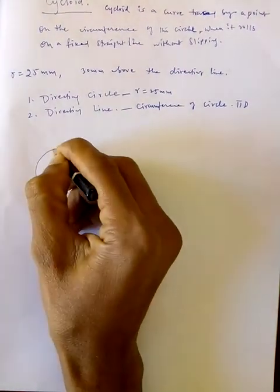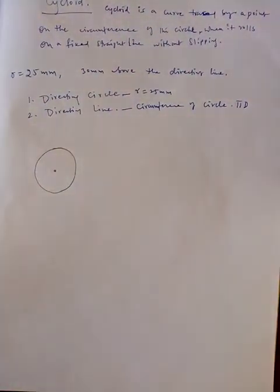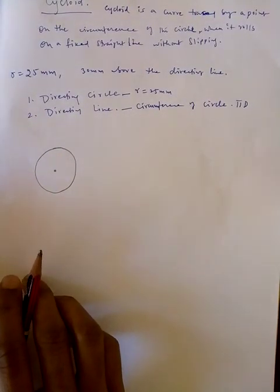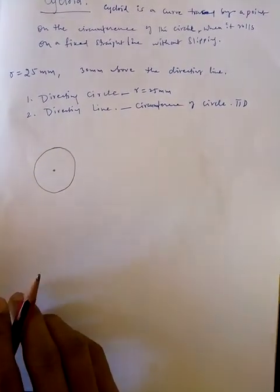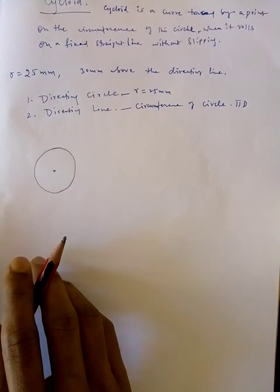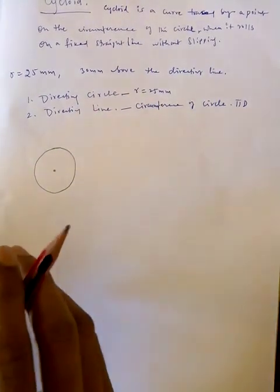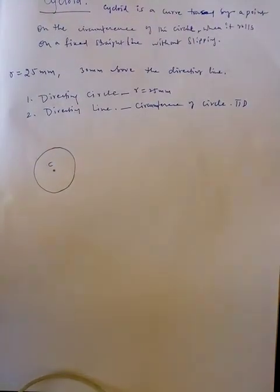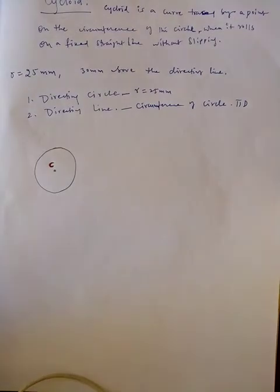With radius 25 mm, draw a circle — I'm doing this freehand here, but use geometrical tools when drawing. The minimum tools required are a pencil, eraser, drafter scale, and compass. Let the center be C.